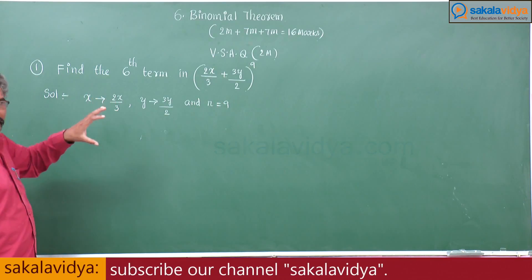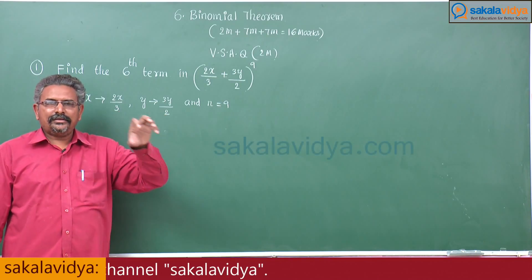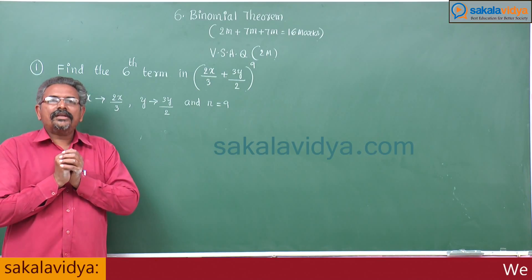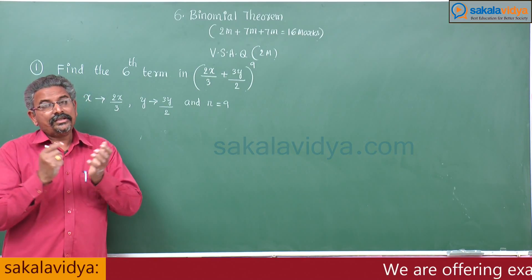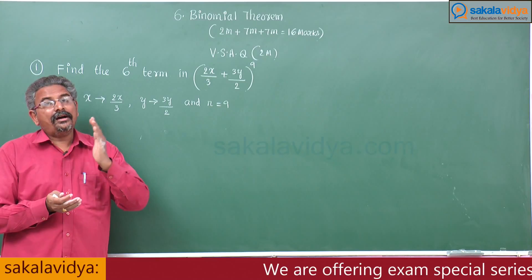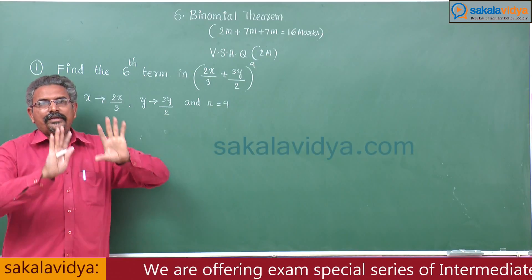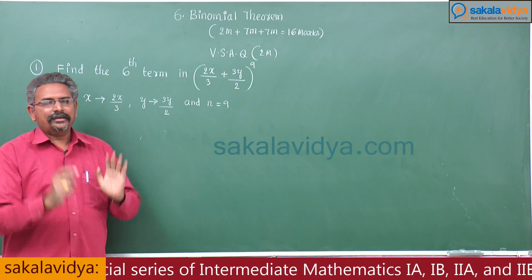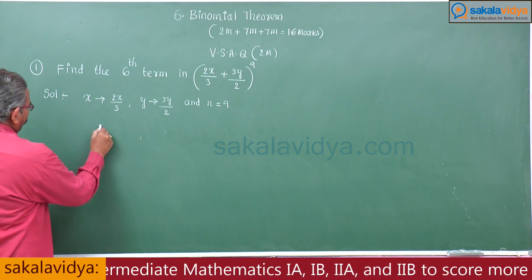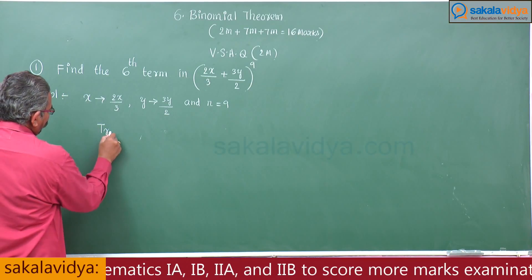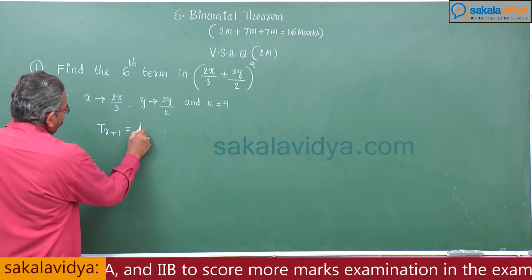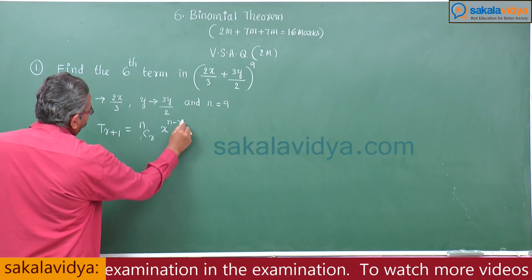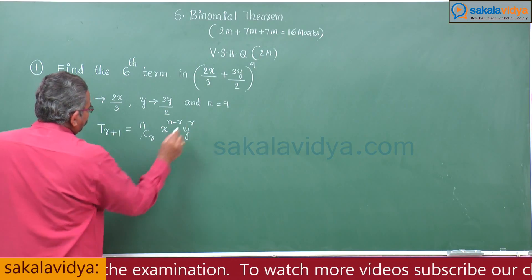In order to find out the required term in the given binomial expansion, we have to remember the general term formula. The general term is T(r+1), and the formula is: T(r+1) = nCr · x^(n−r) · y^r.